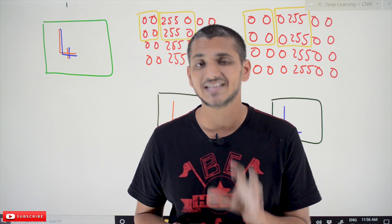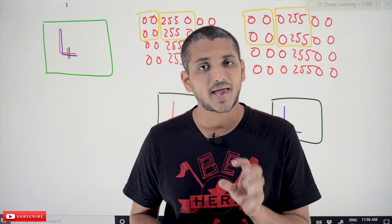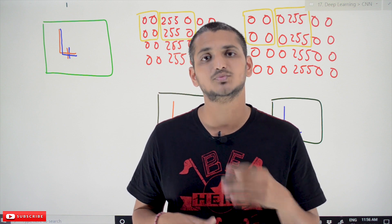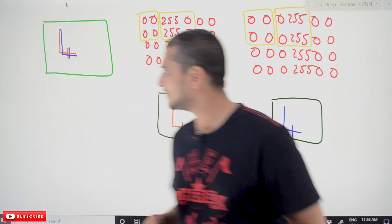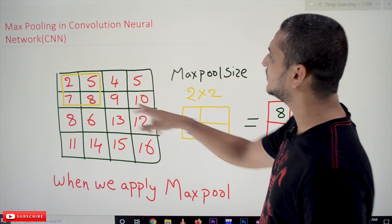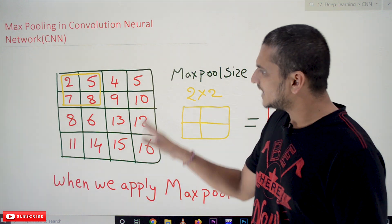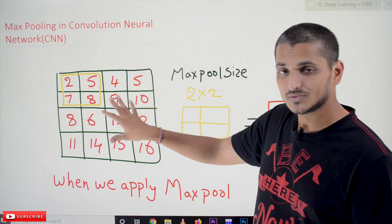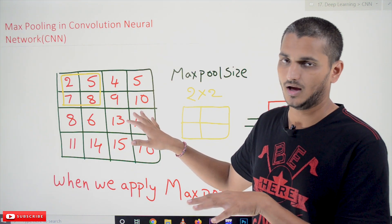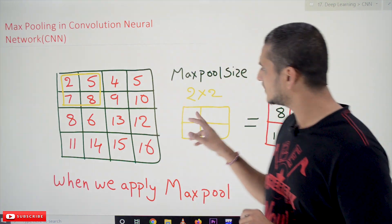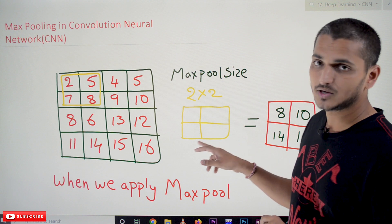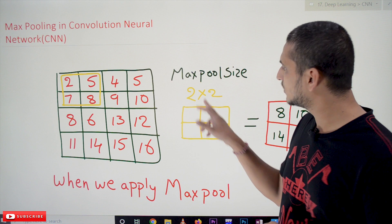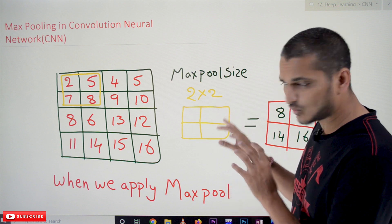Coming to today's class, let's take an example and understand what max pooling layer will do, and after that we will understand what the uses of max pooling layer are. The example we consider here is a 4x4 image on which we have to apply max pooling. Here we will take a max pool of size 2x2. We can take any size — 3x3, 4x4 — but usually 2x2 is used.